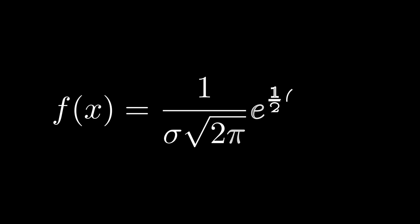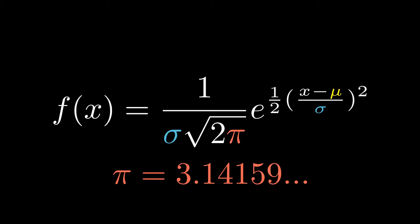Here is the formula for the normal distribution. As you can see, we have mu, which is the mean, sigma, which is the standard deviation, pi is a constant which is 3.14, e is Euler's number which is about 2.718.